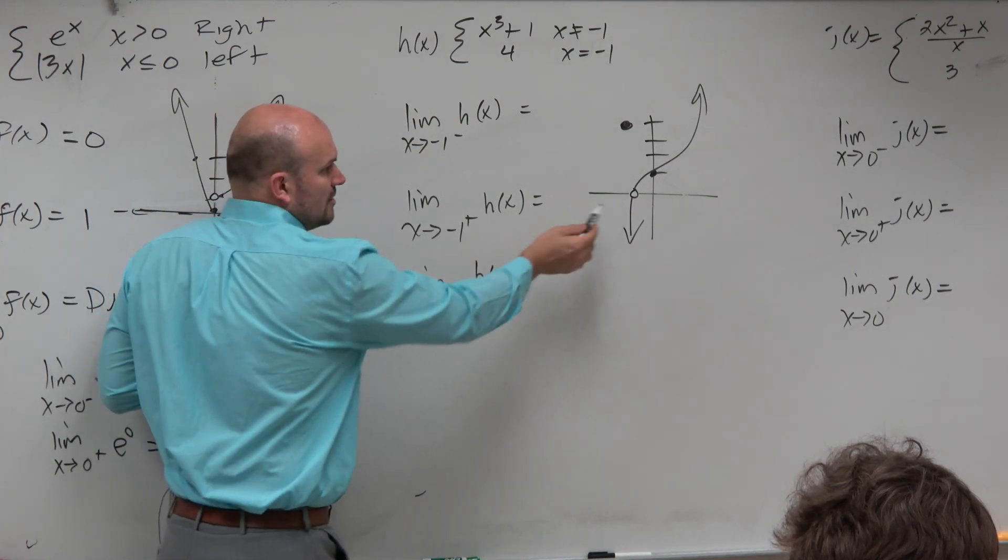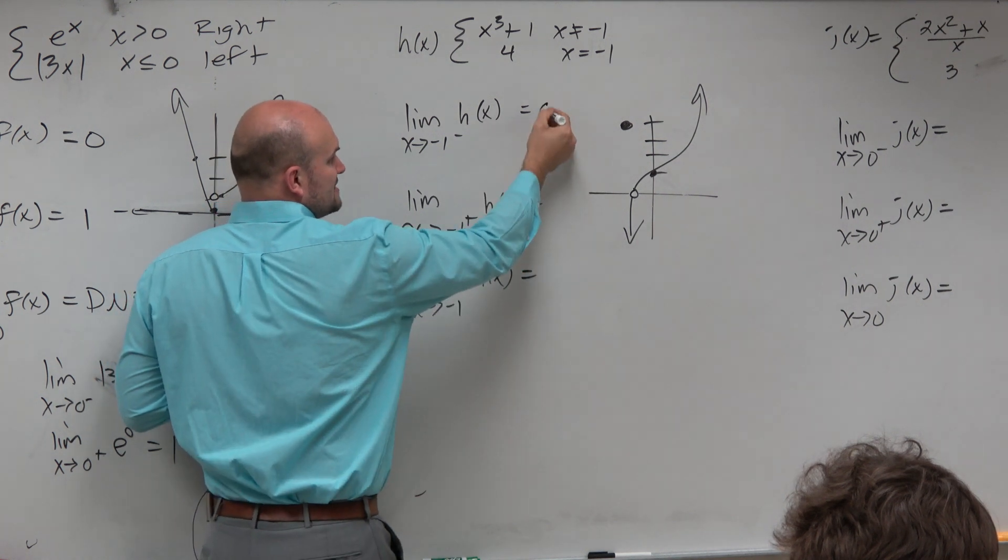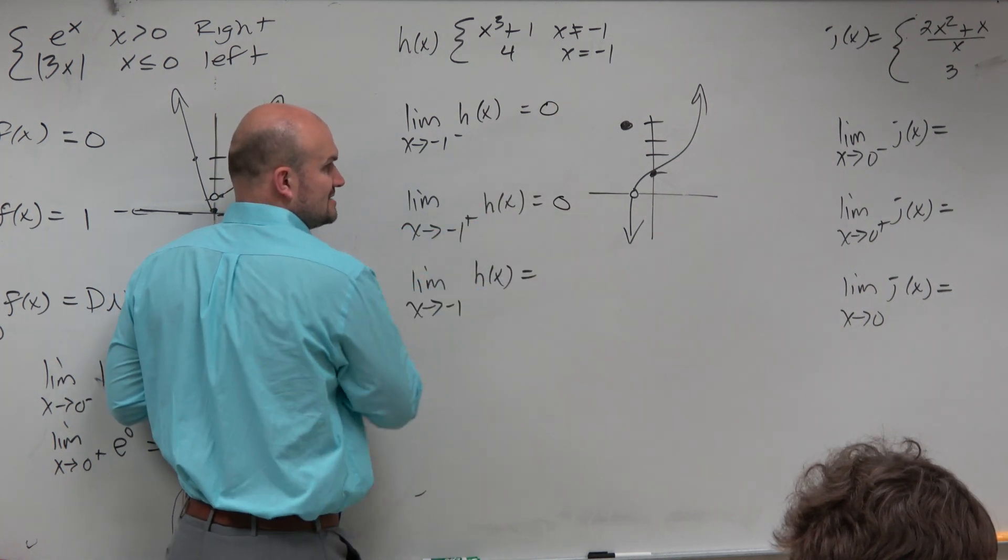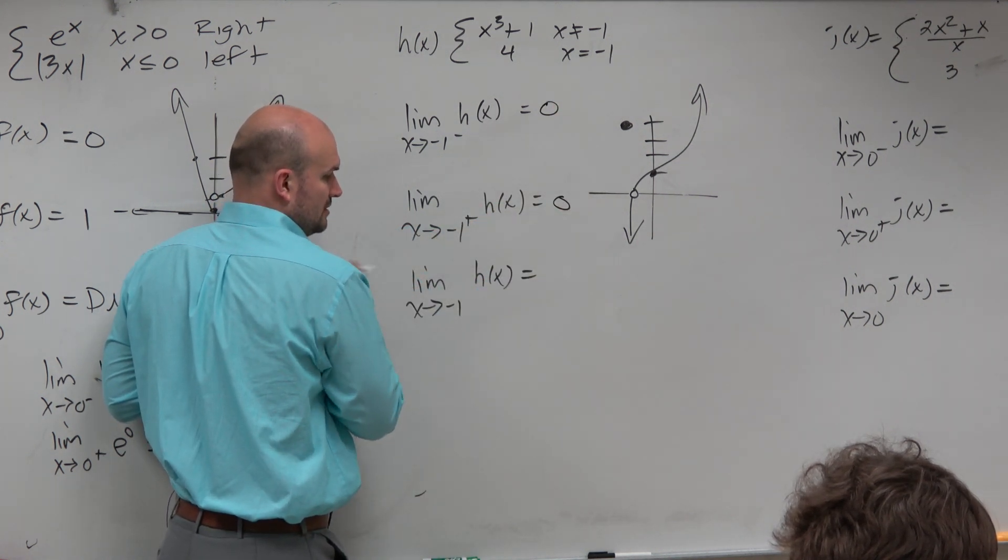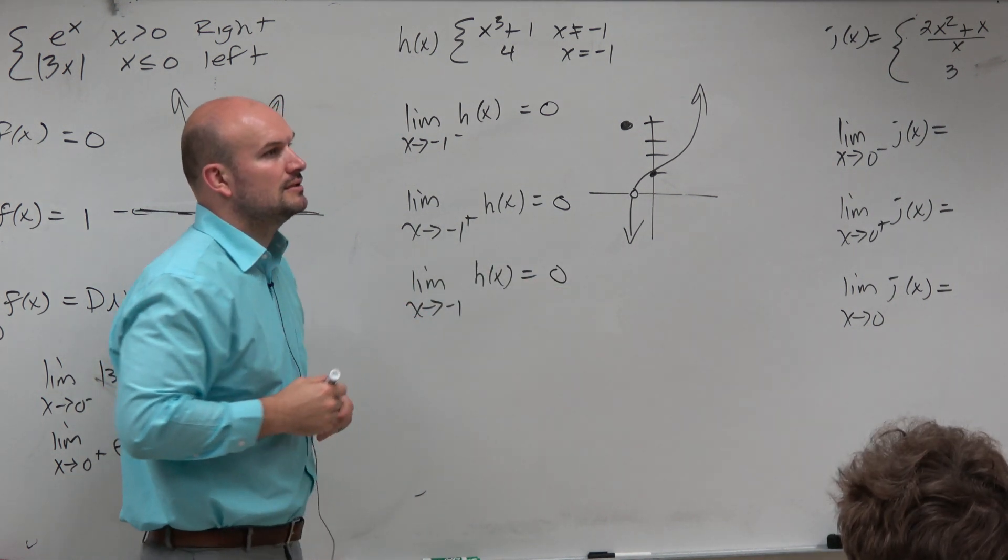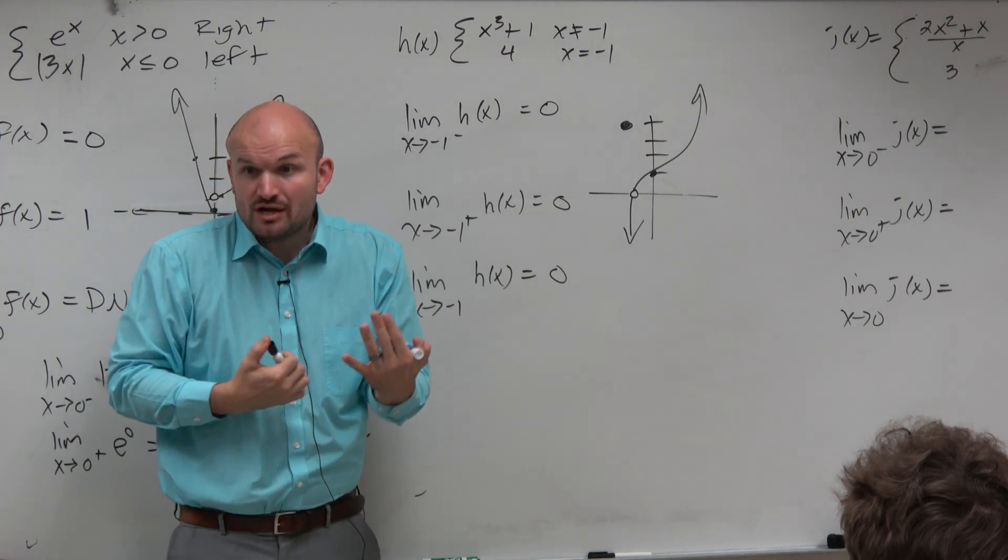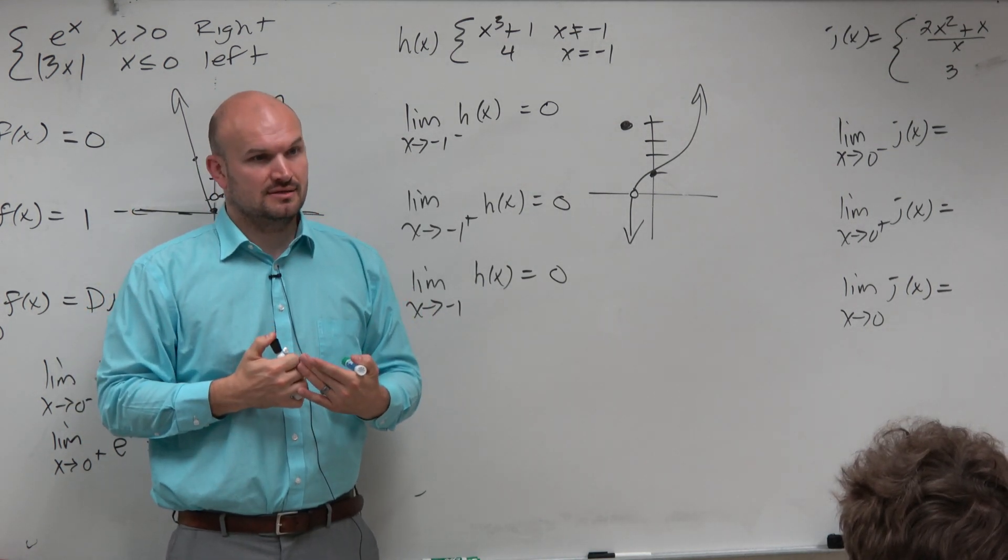0, right? So you guys can see here that the limit as we're approaching from the left is 0. As we're approaching from the right is 0. So therefore, the limit for the general limit is also 0. So when it's a hole, we know that those left and right hand and the general limit is still going to exist, right?